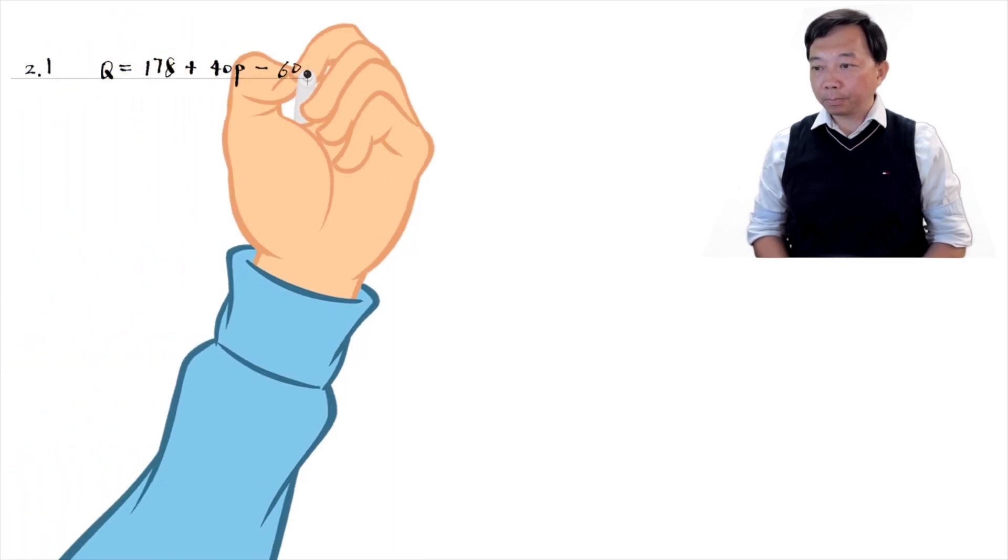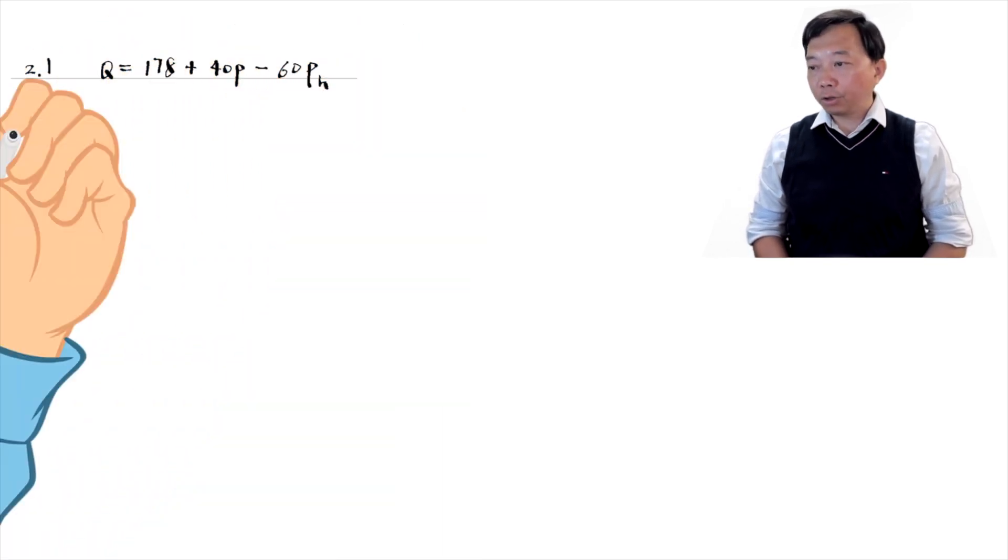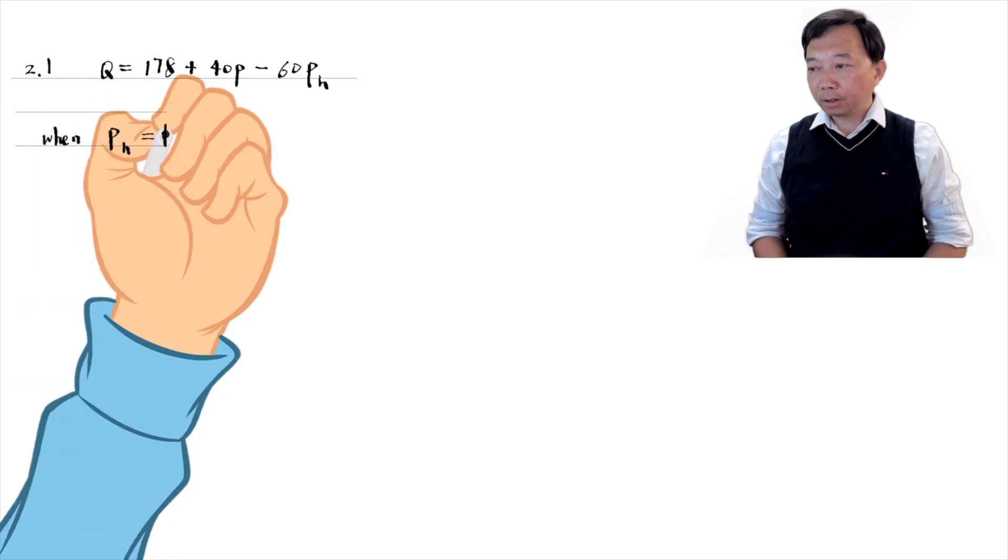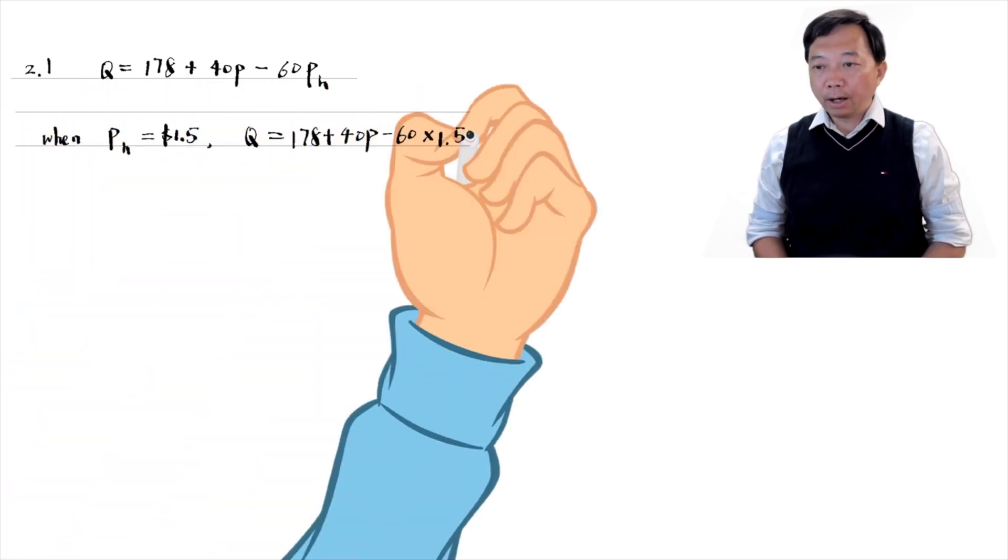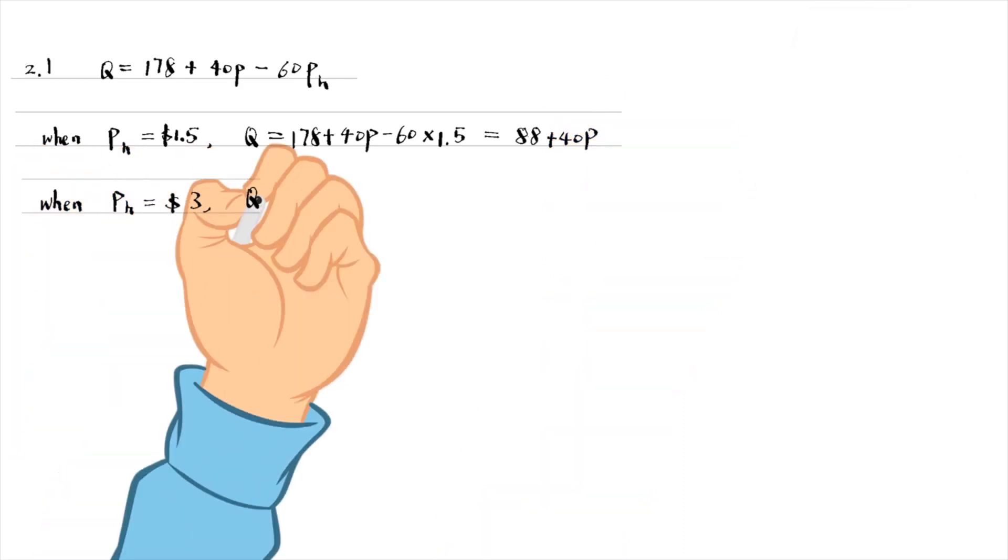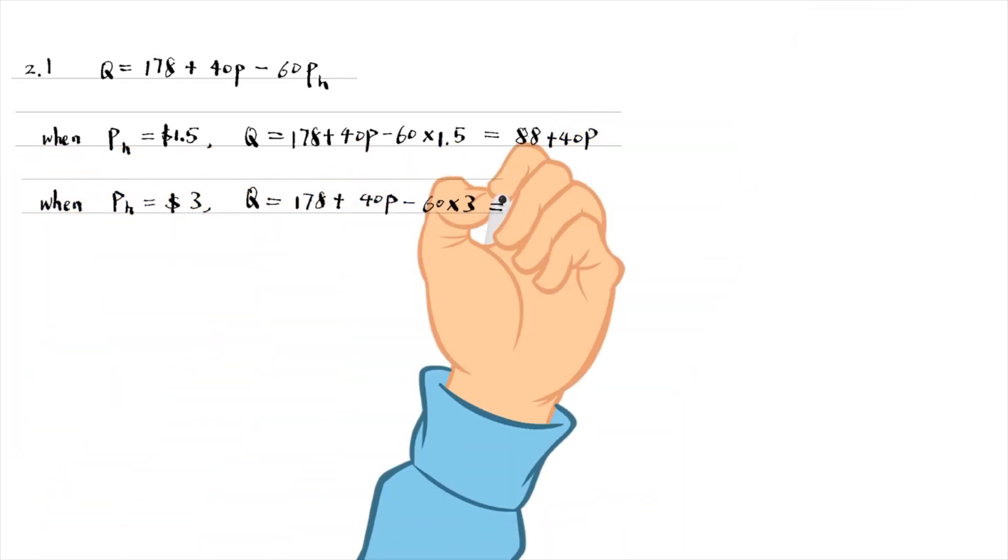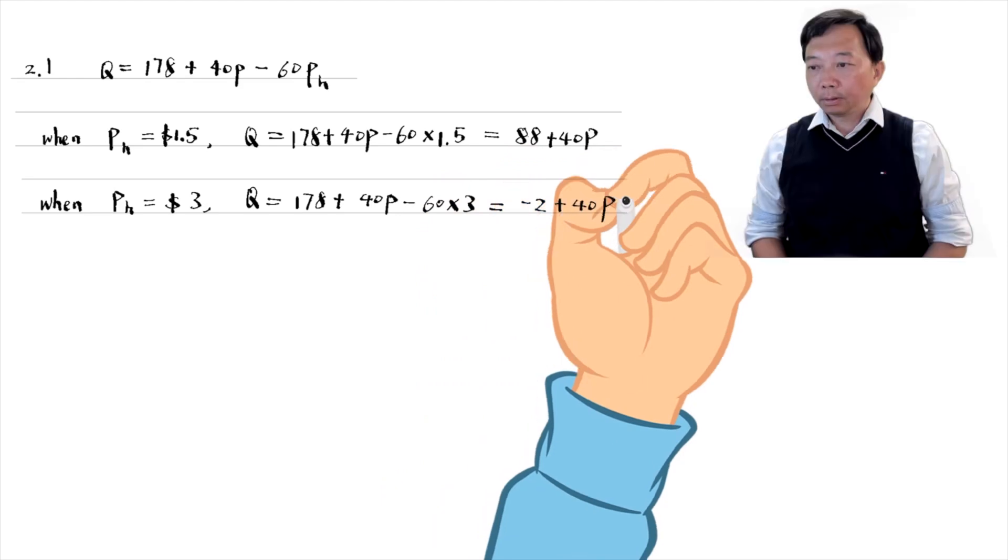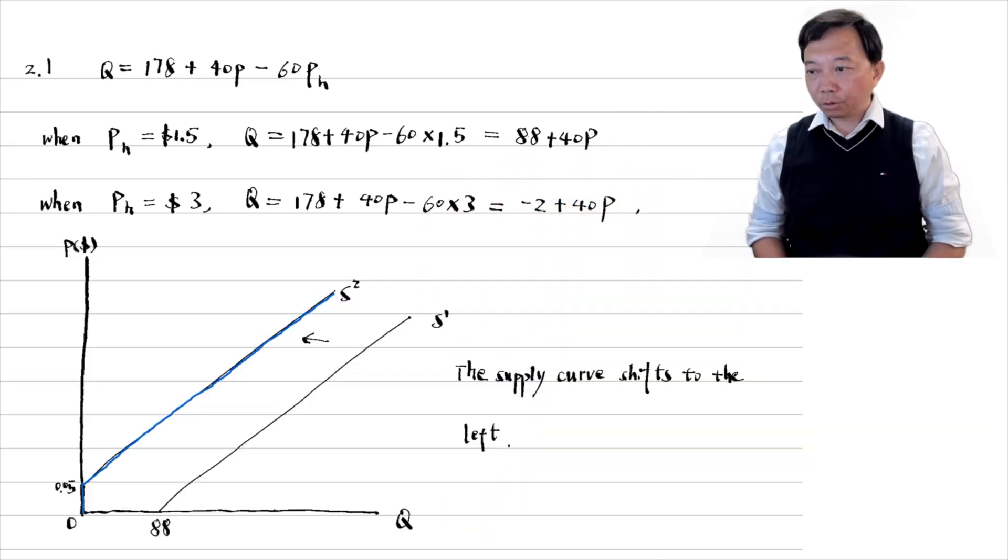We can substitute the values of the hocks price into the equation and write the quantity of pork supplied as a function of its price. The supply curve shifts to the left.